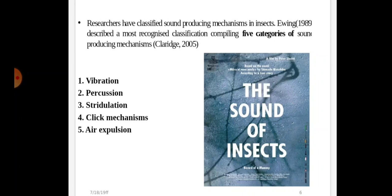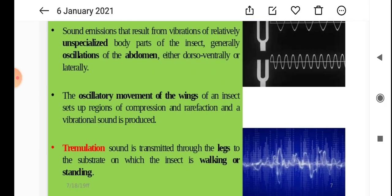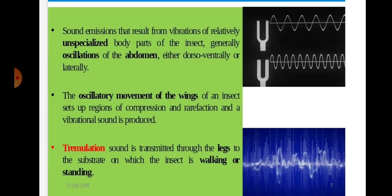First, vibration. Some emissions result from vibrations of relatively unspecialized body parts of the insect, generally oscillations of the abdomen either dorsoventrally or laterally. The oscillatory movements of the wings set up regions of compression and rarefaction, and a vibrational sound is produced.